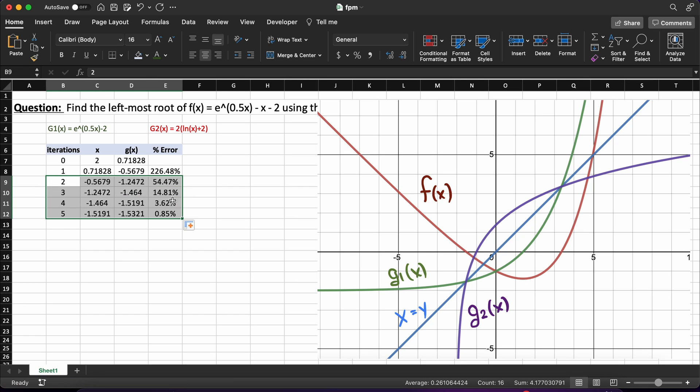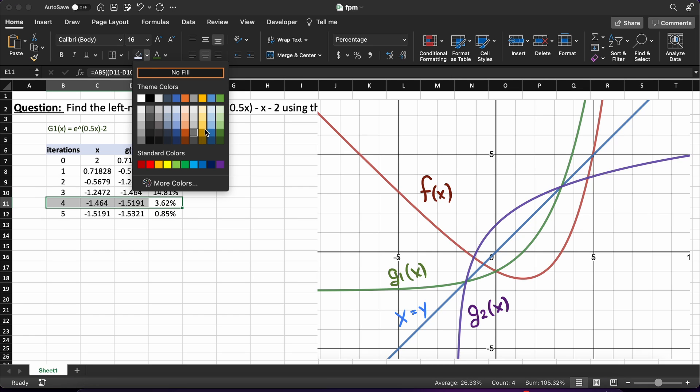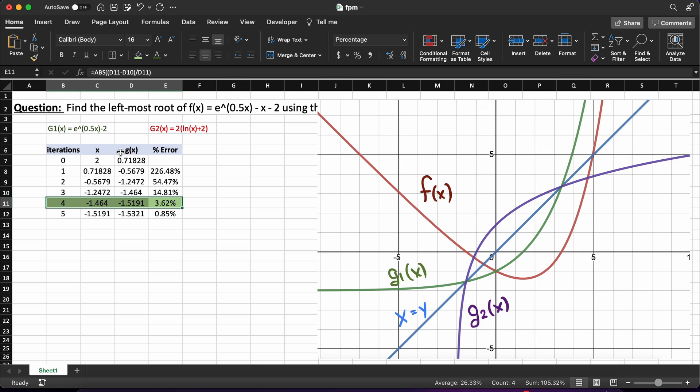Now, all we need to do is drag these rows until we see that our percent error is less than 5. Therefore, as you can see here, we can say that the x root is located at minus 1.519 with a 3.62% error.